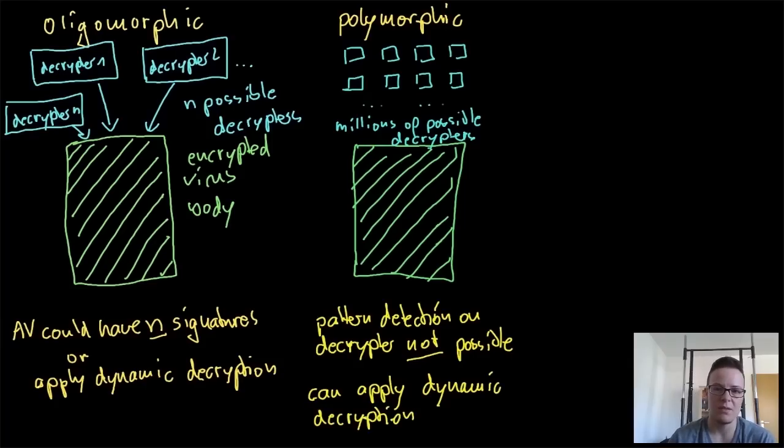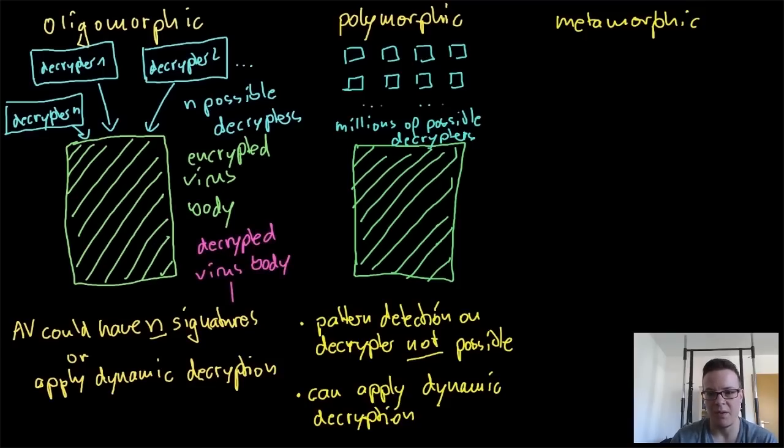In this case, no pattern detection is possible, but they can apply dynamic decryption like by emulation, for instance. And metamorphic viruses are an entirely different breed, so to speak.